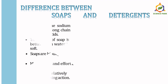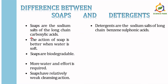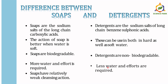Soaps are sodium salts of long-chain carboxylic acids, whereas detergents are sodium salts of long-chain benzene sulfonic acid. Soaps work better in soft water, while detergents can be used in both hard and soft water. Soaps are biodegradable but detergents are non-biodegradable and cannot be broken down in nature. Soaps require more water and effort for cleaning, while detergents require less water and less effort. Soaps have relatively weak cleansing action while detergents have strong cleansing action.